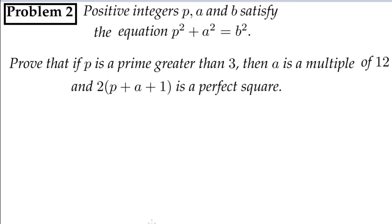Positive integers P, A and B satisfy this equation P square plus A square is equal to B square. Looking like the Pythagoras theorem to you. That might be correct. Prove that if P is a prime greater than 3, then A is a multiple of 12 and another thing which you need to prove is 2 times P plus A plus 1 is a perfect square.